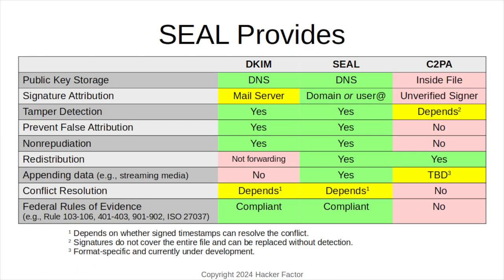SEAL provides a tamper-proof solution for evidence handling. Both SEAL and DKIM store the public key in DNS, making it hard to alter or impersonate the signer. This is different from C2PA, which includes the public key in the file — making it easy for an attacker to replace or tamper with a public key. SEAL can associate the signature to a domain, host, or user, and it provides tamper detection, prevents false attribution, and enforces non-repudiation.